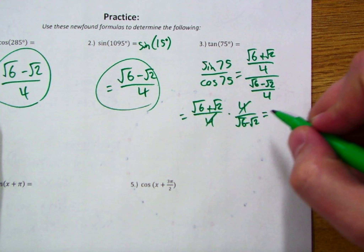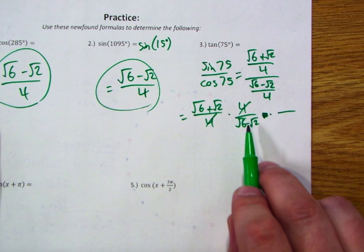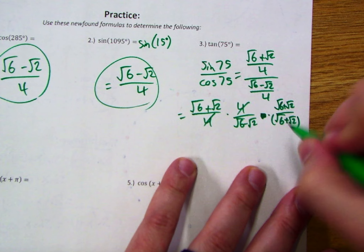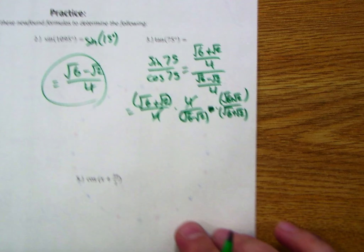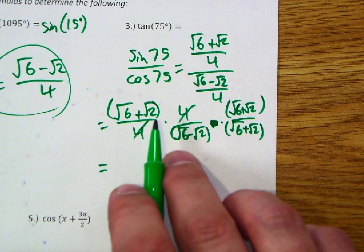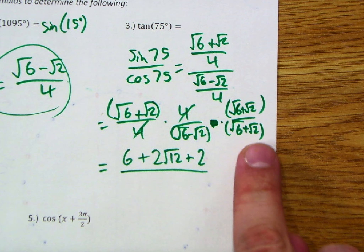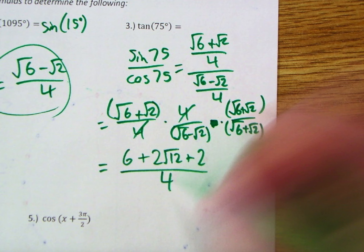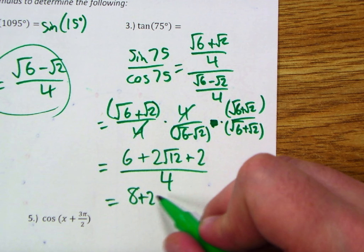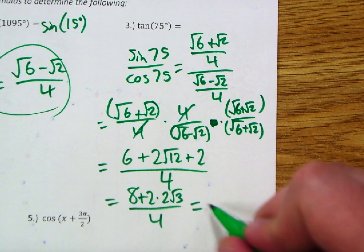To simplify, multiply by the conjugate (√6 + √2) over (√6 + √2). In the numerator we get √6·√6 + √6·√2 + √2·√6 + √2·√2, which is 6 + 2√12 + 2. In the denominator, this is a difference of squares: 6 minus 2 equals 4. Further simplifying: 6 plus 2 is 8, and 2√12 equals 2·2√3 = 4√3. Everything is divisible by 4, giving us 2 + √3. So the tangent of 75° simplifies to 2 + √3.